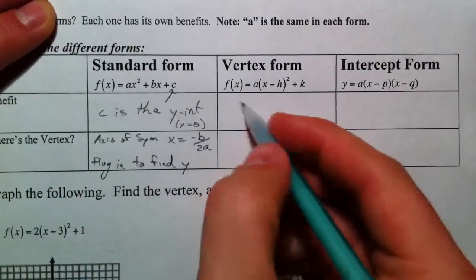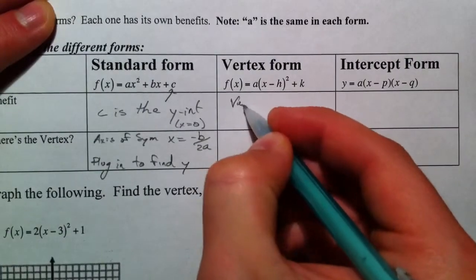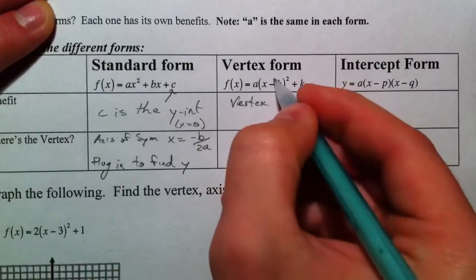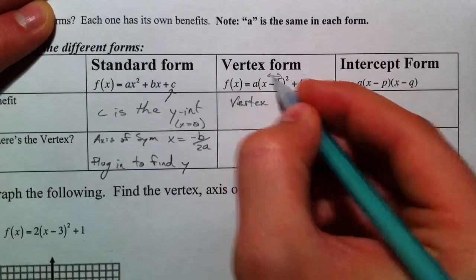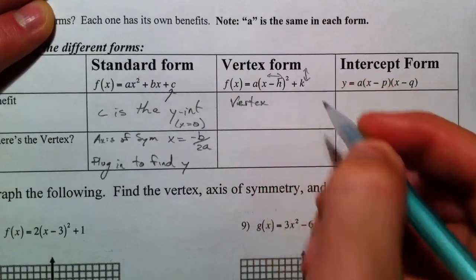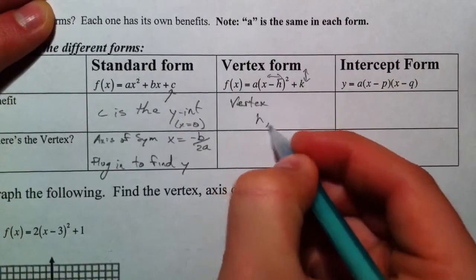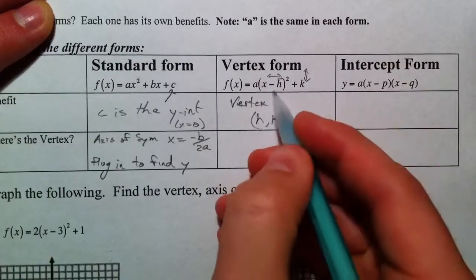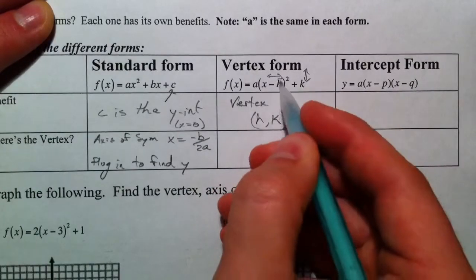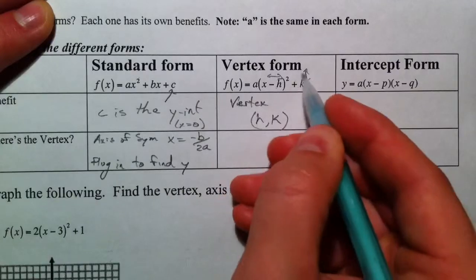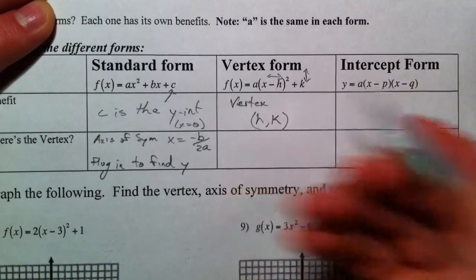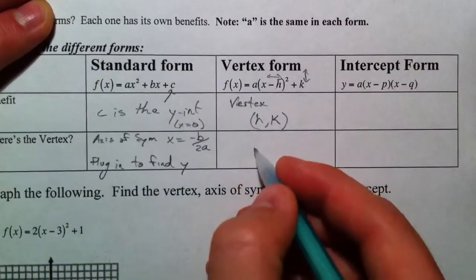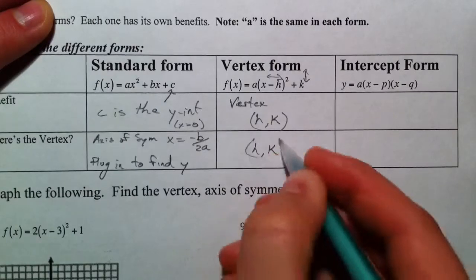Vertex form. Benefit? Obviously, the vertex. We saw that the minus h moved it left and right, plus k moved it up and down. Vertex is h, k. We say minus h and plus k because it's the opposite for the h and exactly how we think about it for the k. The vertex is h, k.